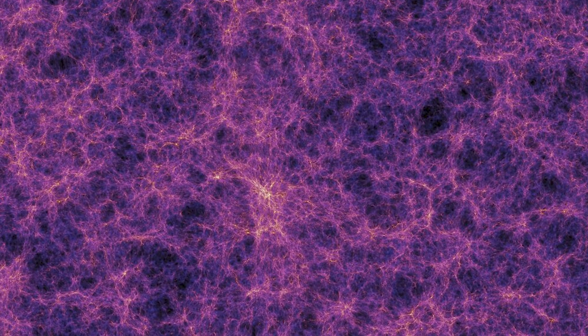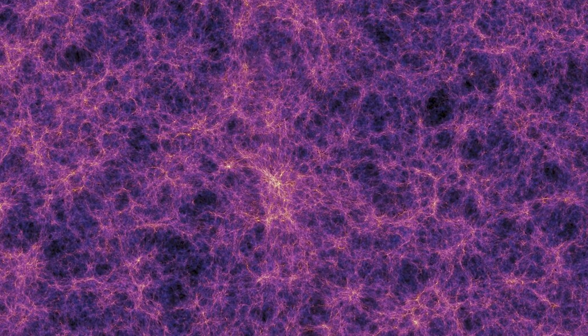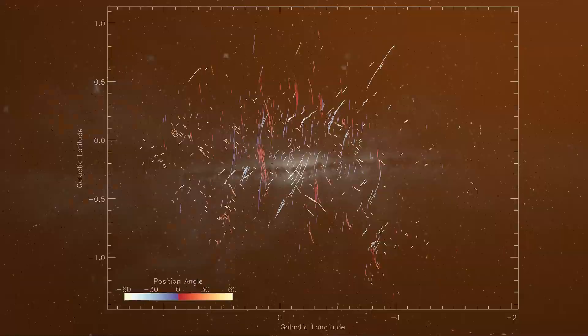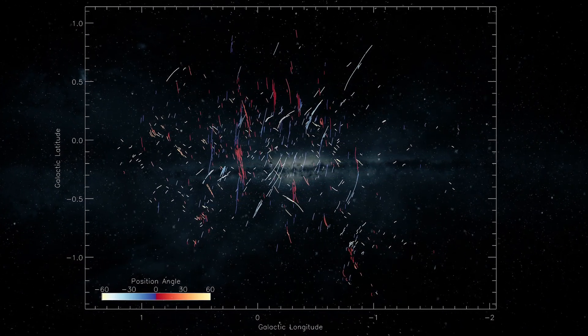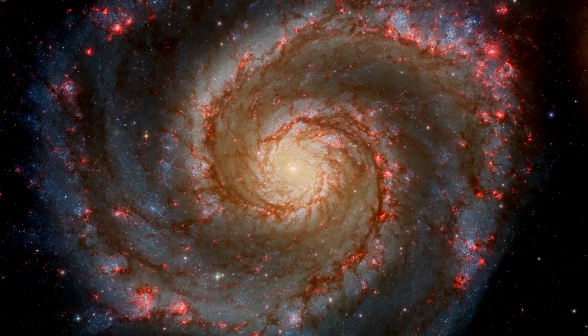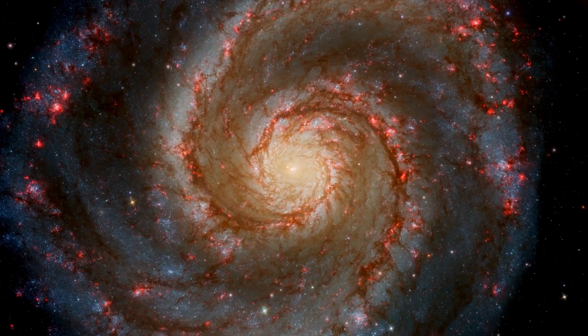However, despite similarities, there are distinct differences between these two filament populations. The newly discovered filaments align parallel to the galactic plane and extend radially towards the black hole, while the vertical filaments envelop the nucleus of the Milky Way.